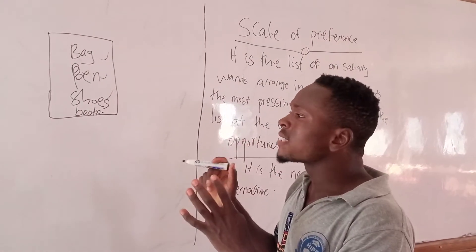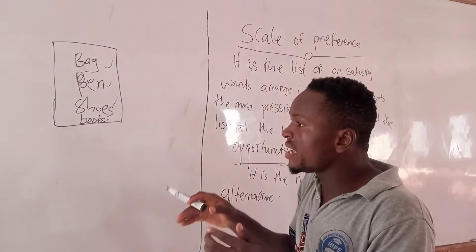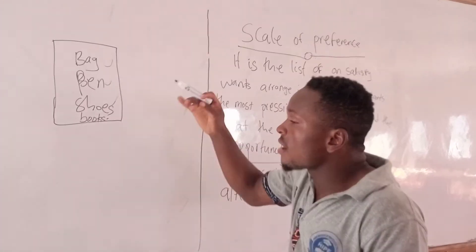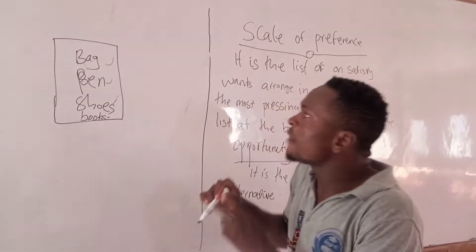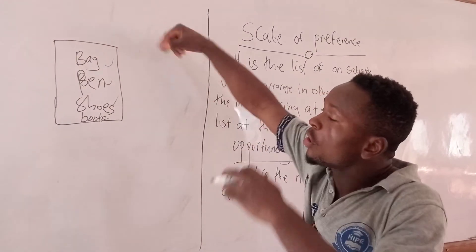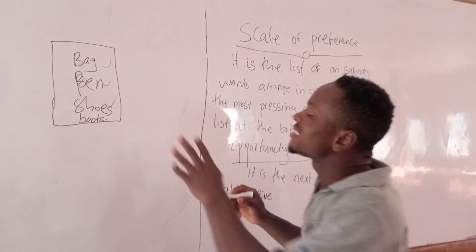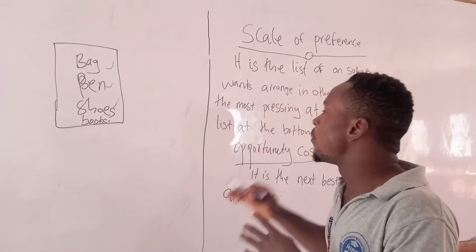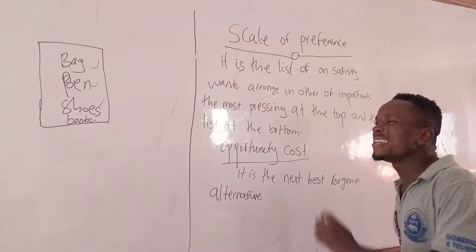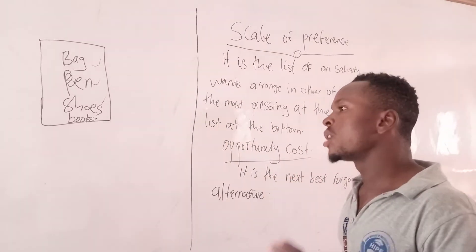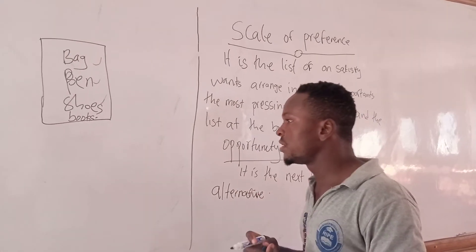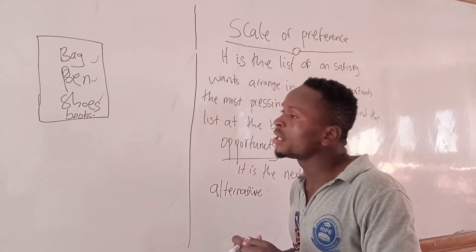Inasmuch as man is bound to make a choice, as I was explaining, he has to come up with the scale of preference. And after a choice has been made from your scale of preference, what is left is known as opportunity cost. Opportunity cost is the next best foregone opportunity.